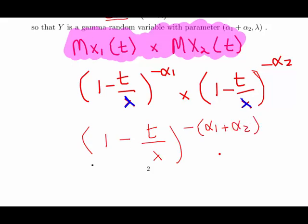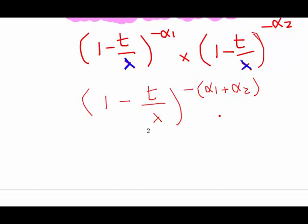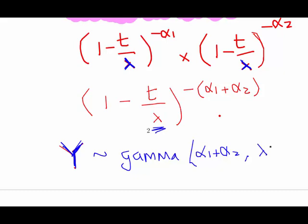So that means that Y is a gamma random variable with this is our shape parameter alpha 1 plus alpha 2, and the rate parameter there is the denominator of this fraction here, which is still lambda. So that's it.